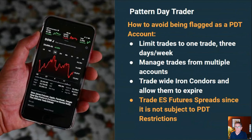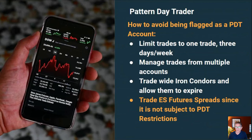The best way to get around PDT is to trade ES futures — ES futures spreads options basically. I trade those consistently because overnight you can actually manage those trades. With SPX, after 4:00 or 4:15, you can't manage those trades — they're stuck and you have to wait until the opening of the daily trading session to actually manage them.